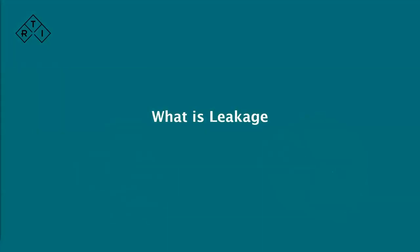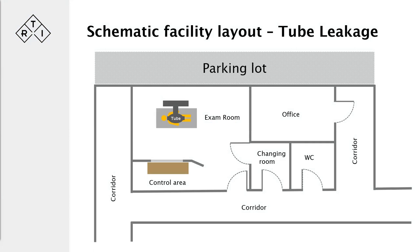Let's take a closer look at leakage. Leakage arises because X-rays are emitted in all directions from the target or anode, not just in the direction of the primary beam. Although the tube housing is heavily shielded, some leakage radiation can still be transmitted. That is one of the things we are interested in measuring, to make sure leakage radiation is within permissible limits.